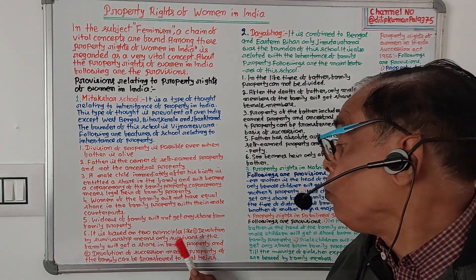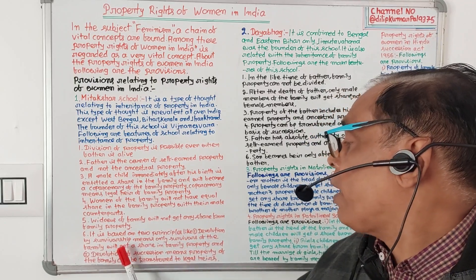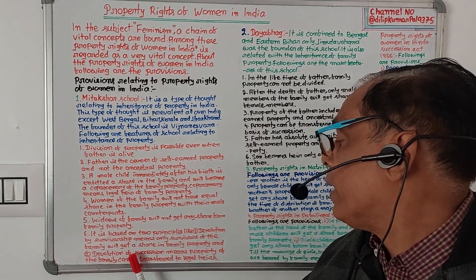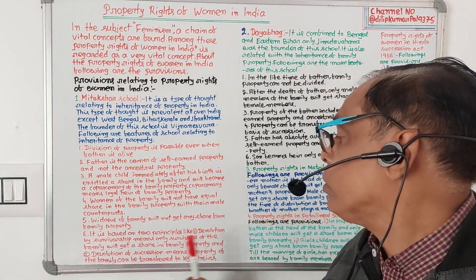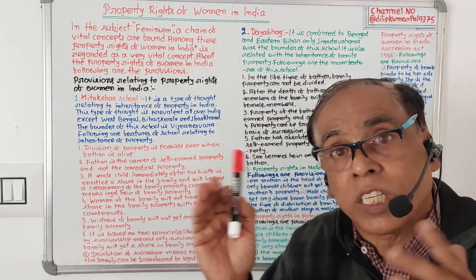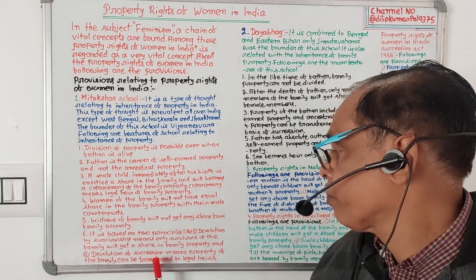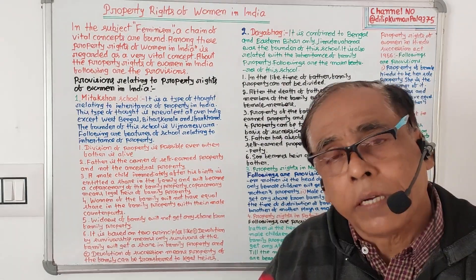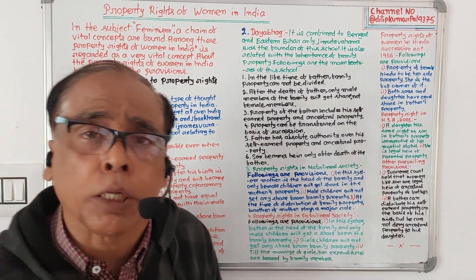Number six: the Mitakshara school is based on two principles — devolution by survivorship, meaning only survivors of the family will get a share in the family property, not the deceased; and devolution by succession, meaning property of the family can be transferred to the legal heirs.